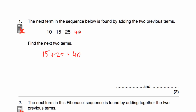And if we want to find the next term, we're going to add 25 and 40. So 25 plus 40 is equal to 65. So our next two terms were 40 and 65. With a Fibonacci sequence, to find the next term, you add the two previous terms. That's it.